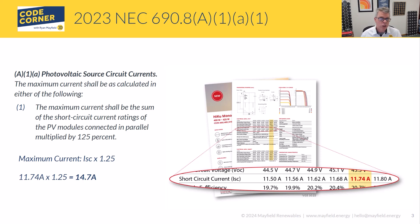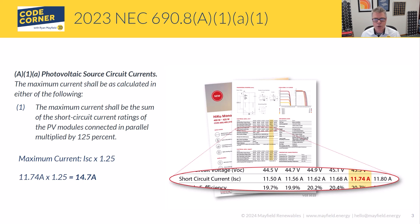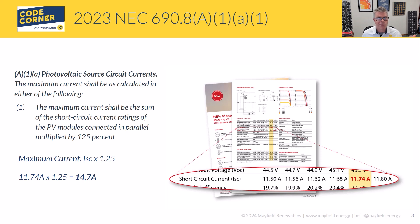There is also an A1A2 option. The second part of calculating maximum circuit current under A1A2 allows you to use a modeling program to determine the maximum current value for your specific location and installation. You would take into account tilt, orientation, location, and many other variables that return what the maximum circuit current is. This option is only available for systems over 100 kilowatts, so it's likely something you'd use for larger-scale systems. Those are your two options for defining source circuit maximum current, with the most common being short circuit current times 1.25.